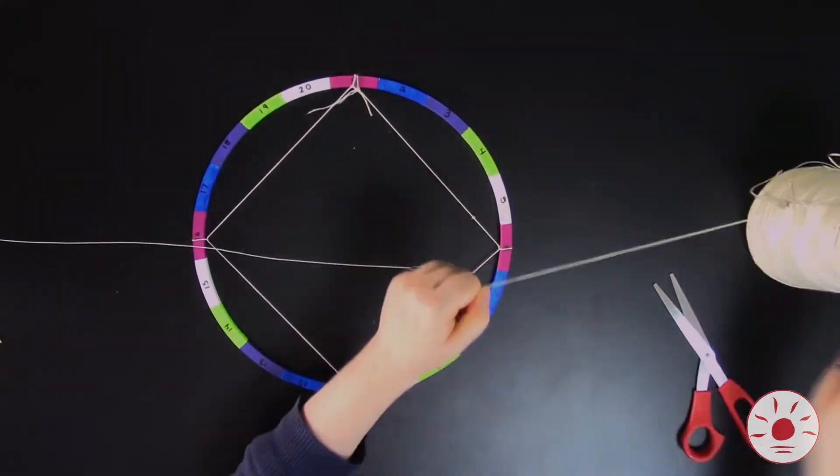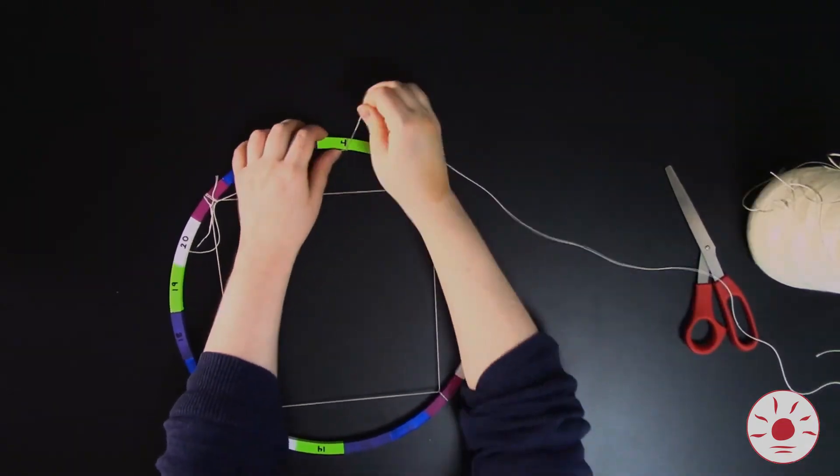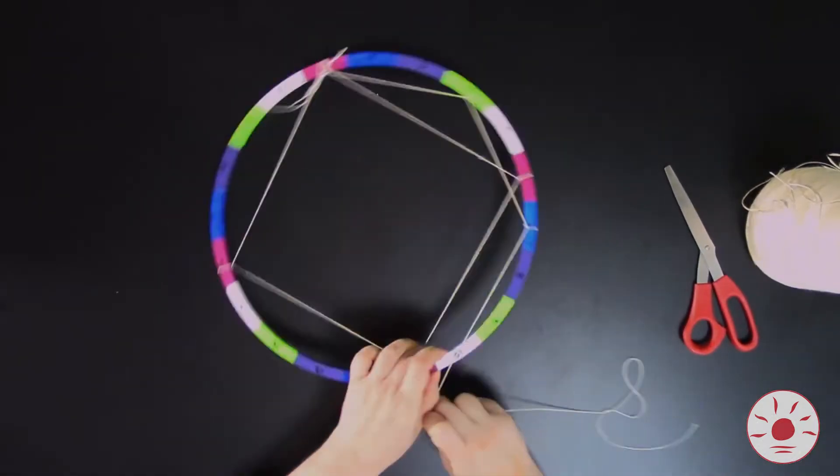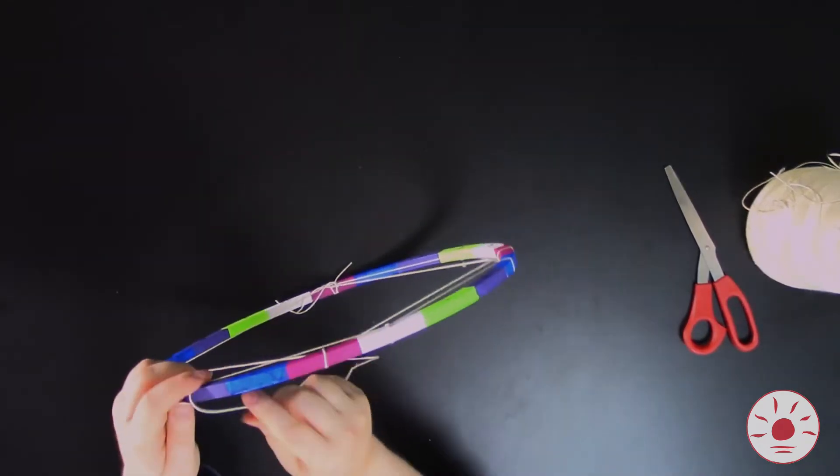Tie the string around the first section again. Now we're going to repeat the last step, but instead we're going to count by 3s. This is not going to bring us back to section 1, as 3 doesn't go into 20 evenly. But that's okay.